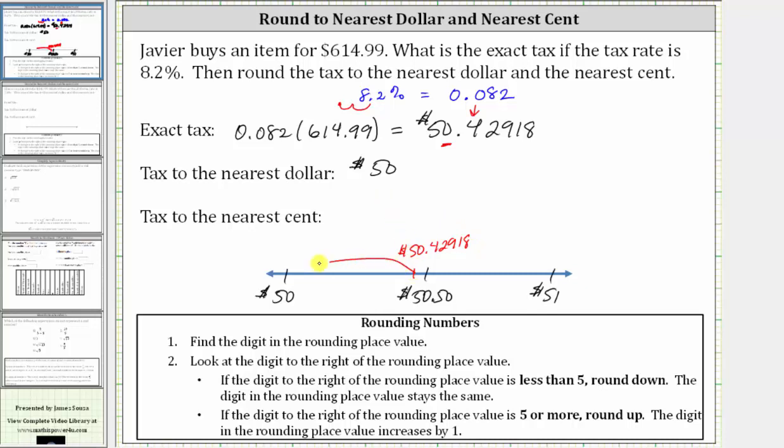And this is why we round down to $50. The only thing we have to remember is when the amount is right in the middle, we would always round up. So if the exact tax was $50.50, we would round up to $51.